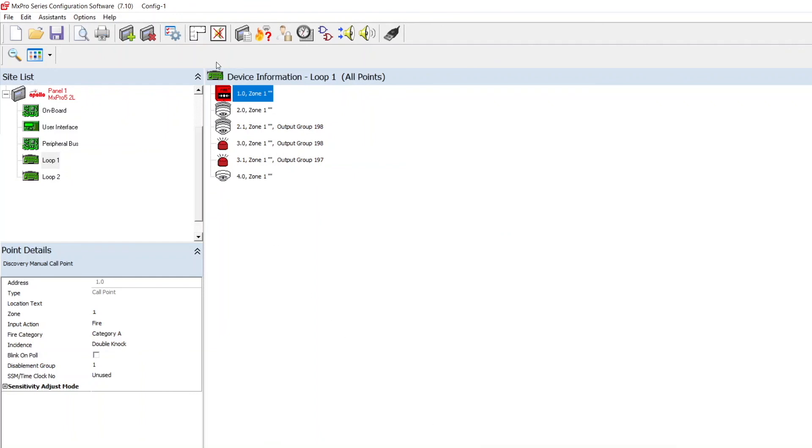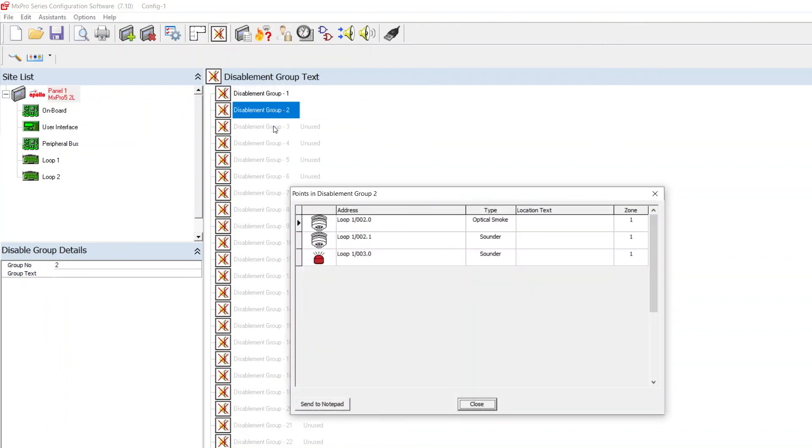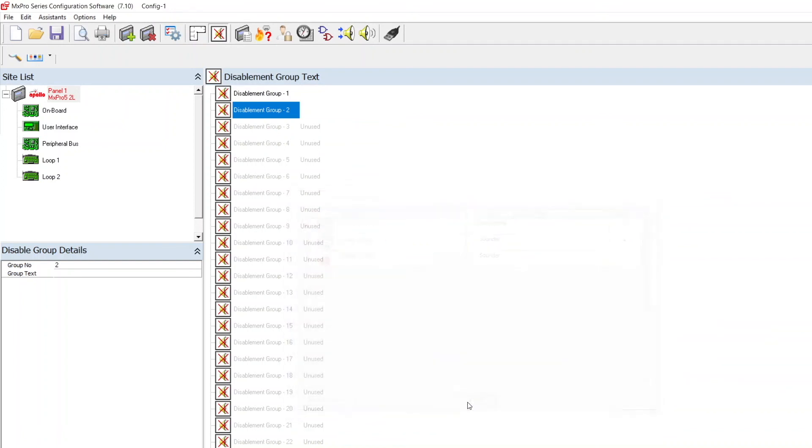Disablement groups can then be viewed by selecting view edit disablement group text, then right clicking on a group and selecting points in disablement group. Once the disablement groups have been programmed, the config must be uploaded into the panel.